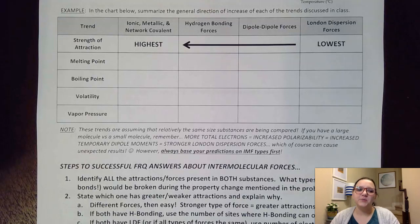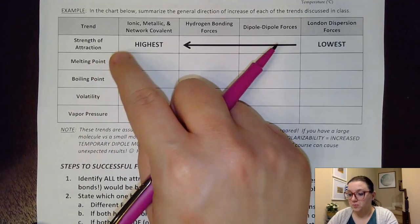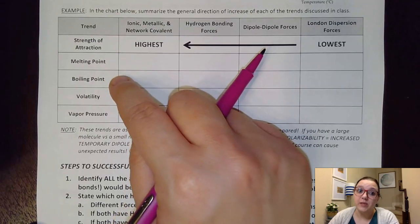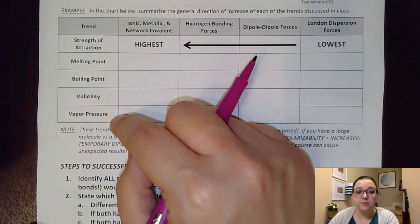Hi guys, Ms. Marusik here, and in this video we're going to be talking about writing free response answers to questions where we are having to justify one of these four properties: melting point, boiling point, volatility, or vapor pressure.